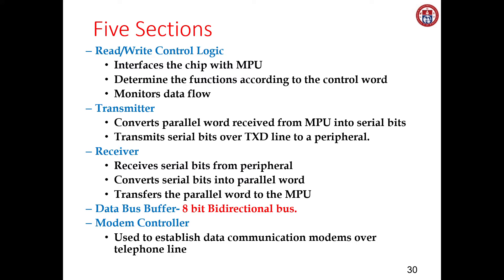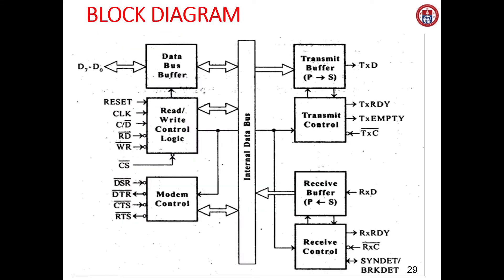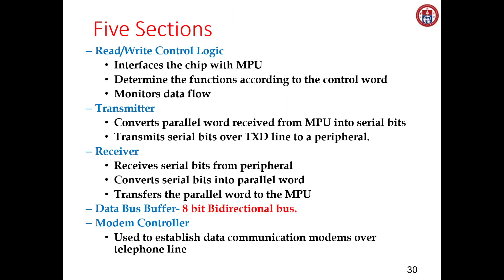The receiver section receives the serial bits from the peripheral device and converts them into a parallel word. The data bus buffer provides an 8-bit bidirectional data bus from D0 to D7. The modem controller — modulator and demodulator — is used to establish data communication over the telephone line.